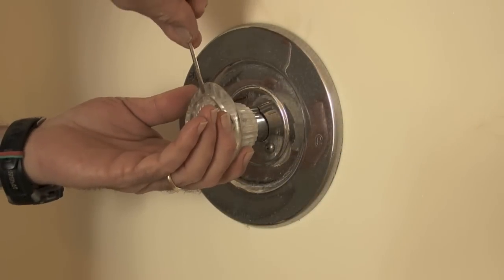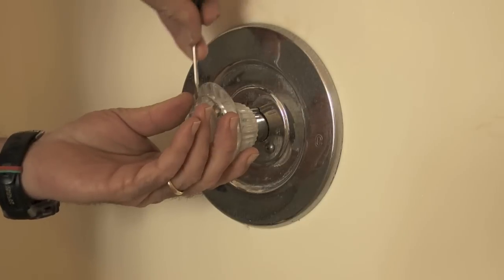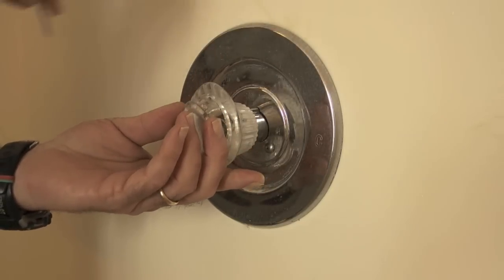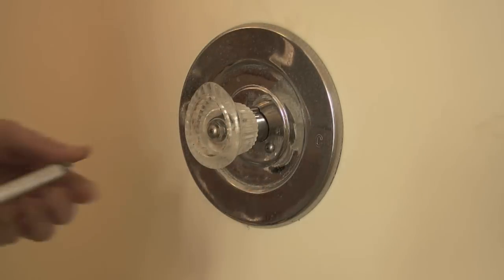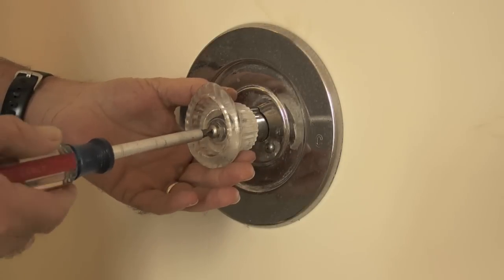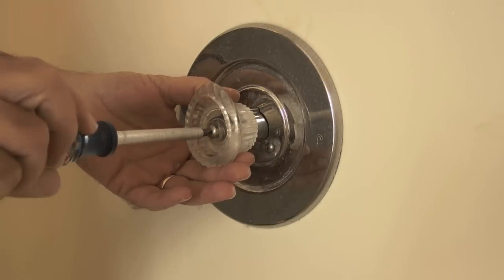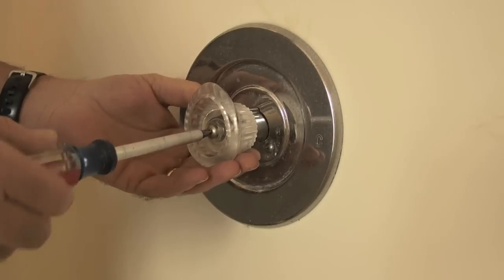First, I need to remove the shower knob, and to do that, I will pry off the knob cover. Next, I will remove the screw in the center of the knob with a Phillips screwdriver.